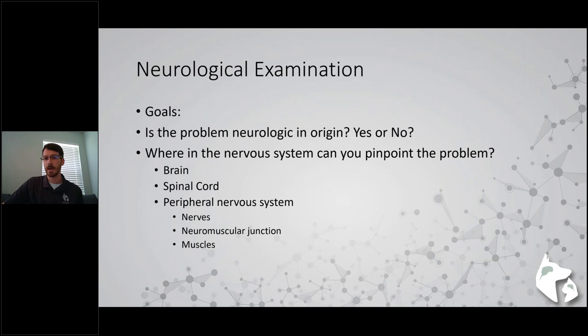What's important about pinpointing what and where the problem is - if you add this in with the signalment of a patient, including their history, age, breed, and gender, you can better differentiate what potential causes there are. Older patients would have more potential for cancerous processes; younger patients maybe more congenital or malformation-type processes. You'll be able to better differentiate if you know where in the nervous system the dysfunction is coming from.